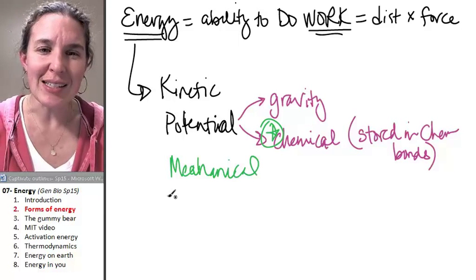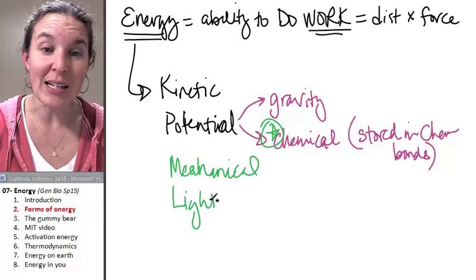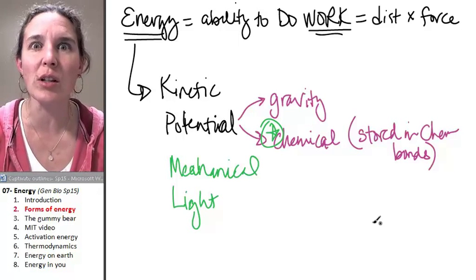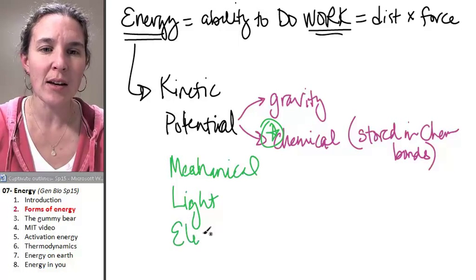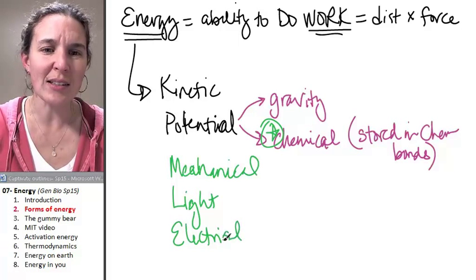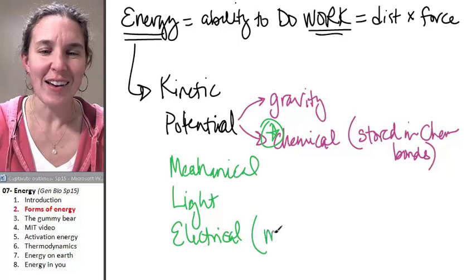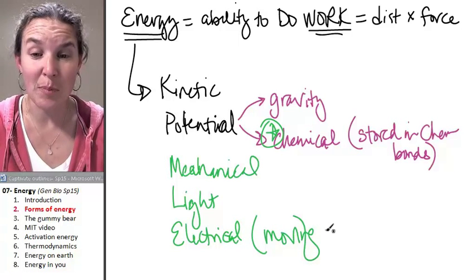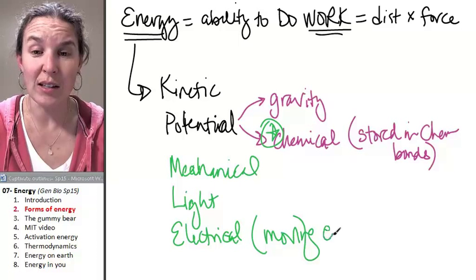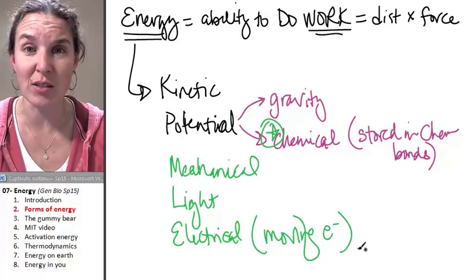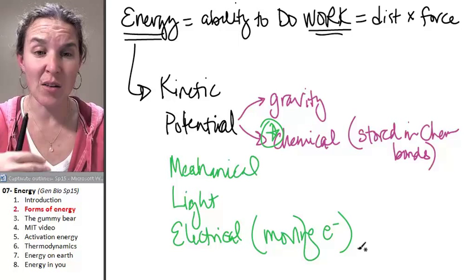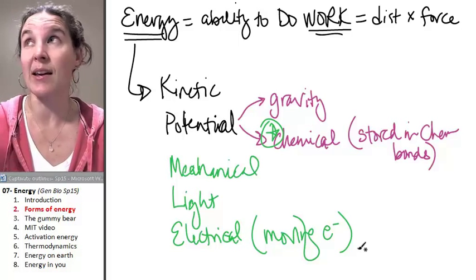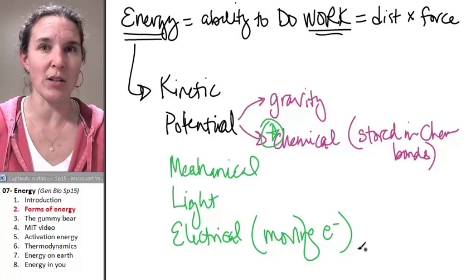Radiant energy is light. We're going to talk about light energy. Energy is so weird. Electrical energy - what is electrical energy? This is fantastic. Electrical energy is basically moving electrons, moving charged particles. If you have movement of charged particles, you end up with electrical energy, like in that light up there.